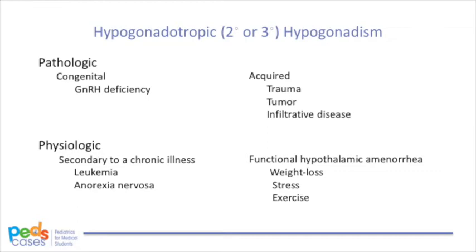Physiologic or functional causes include chronic illness of major significance, such as leukemia — the body expends so much energy fighting disease that it cannot afford resources for further growth and reproductive maturation. Individuals with eating disorders such as anorexia nervosa can also have a negative energy balance and difficulty entering puberty. In functional hypothalamic amenorrhea (FHA), there is an absence of menstruation, which can manifest as primary or secondary amenorrhea, related to weight loss, stress, or exercise. Once these physiologic problems are addressed, the child should be able to go into puberty.